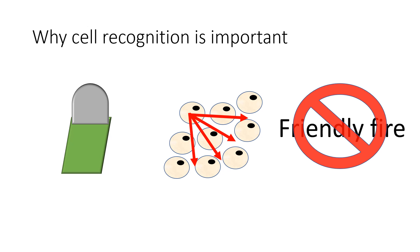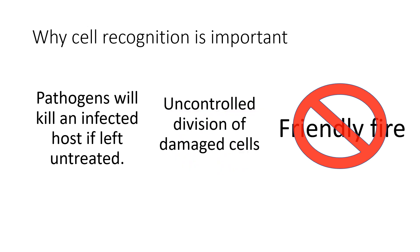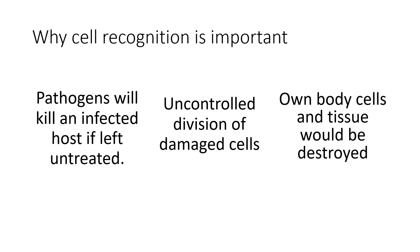There are three main purposes behind cell recognition. First, if a pathogen enters an organism and is not identified as non-self and destroyed, it will result in death of the organism. Second, we need to identify cells undergoing uncontrolled division — essentially cancerous cells — because if they are not identified and dealt with, they can also result in death of the host. Finally, we don't want our body cells destroying our own tissues and red blood cells, so the body must recognise those as self rather than foreign.